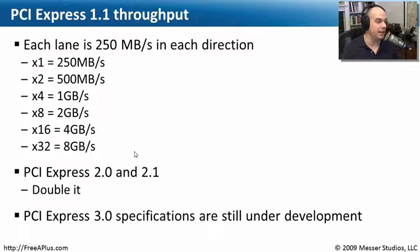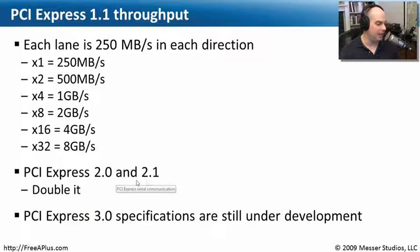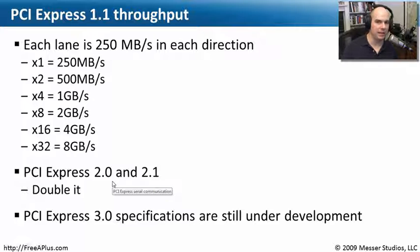Each lane in PCI Express 1.1 allowed 250 megabytes per second in each direction on this serial connection. So on a x32 connection, you're able to get up to 8 gigabytes per second going in each direction. The new formats, PCI Express 2.0 and 2.1, just doubled those numbers — a huge amount of throughput. This is what we've needed for our high-speed graphics interfaces and other high-speed devices.